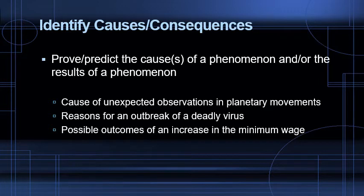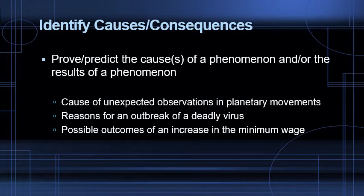Identifying causes and consequences: what you're trying to do is prove what has led to a phenomenon — what's behind a certain situation or event — and/or prove the results of it, that certain things have happened because of a phenomenon, or even predict what may happen in the future. For example, you could be trying to prove what's behind some unexpected observations in planetary movements, determining the causes of an outbreak of a deadly virus, or predicting the possible outcomes of an increase in the minimum wage.